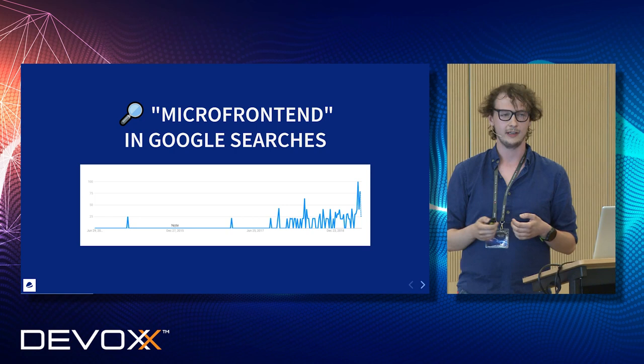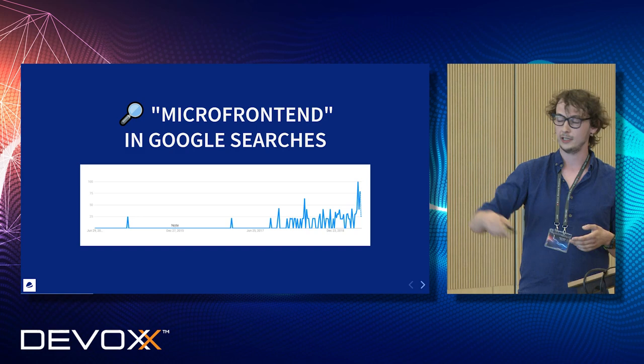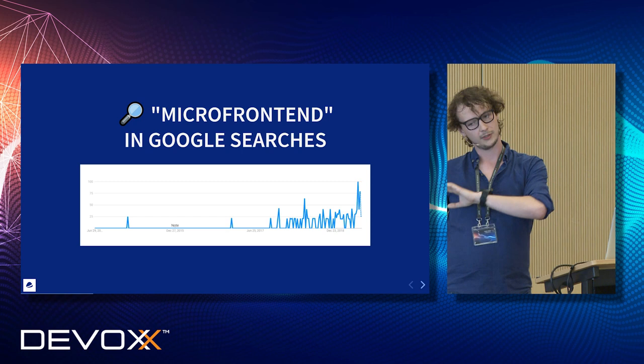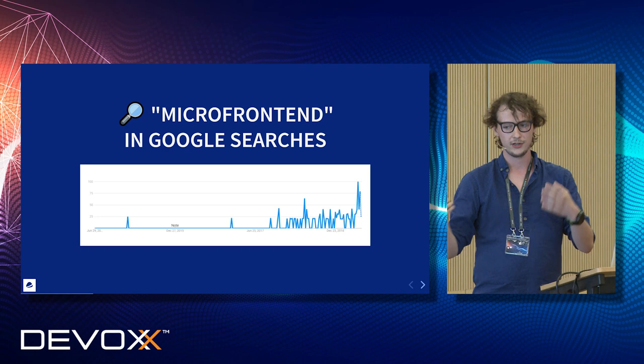Micro-frontend architecture, then, would be an approach in which independently deliverable micro-applications are composed and served to the end-user as one complete coherent application. Such an application may look to our end-users like a regular website, while under the hood being built as a collection of separate micro-applications. Each one of those applications has its own code base, its own repository, its own pipeline, its own version on each environment at any given point in time, and its own team responsible for that area end-to-end.